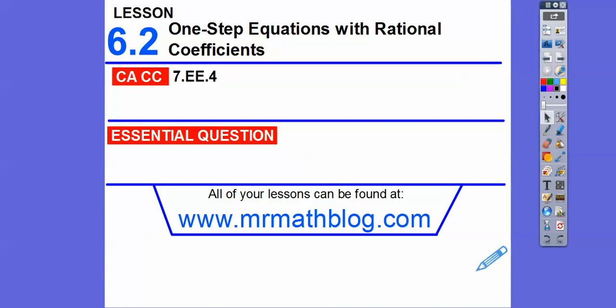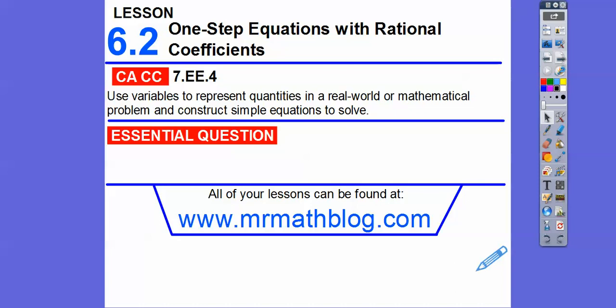Hey everybody, this is Mr. MathBlog. This is a quick, fast lesson. I think it's pretty easy. One-step equations with rational coefficients. Rational just means a fraction or a decimal. We've already solved equations with integer coefficients, and the coefficients are the numbers in front of x or y or whatever the variable is. So we're going to be doing some multiplying and dividing and addition and subtraction. So there's our common core strand for our teachers, and then our question here is how do we use one-step equations that have rational coefficients to solve the problems? So here we go.